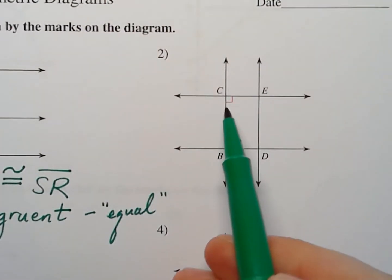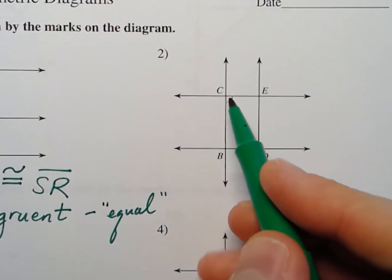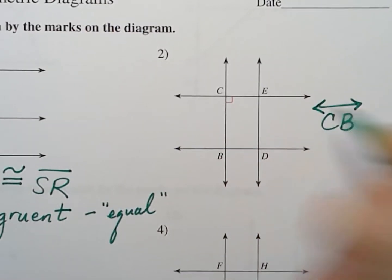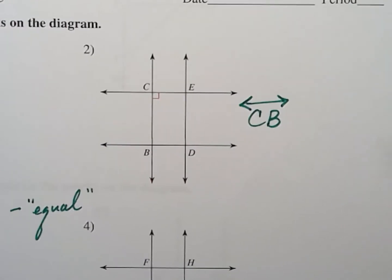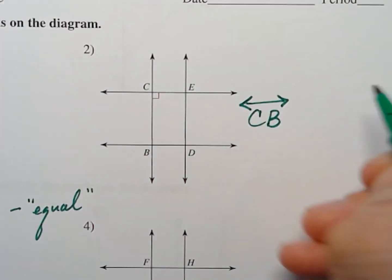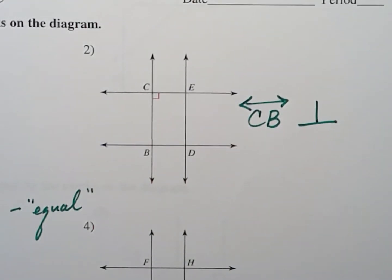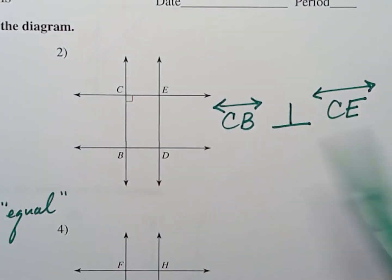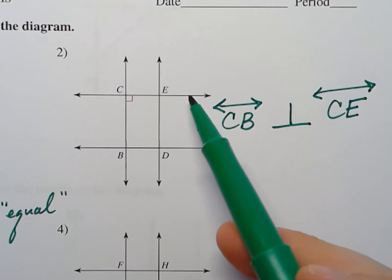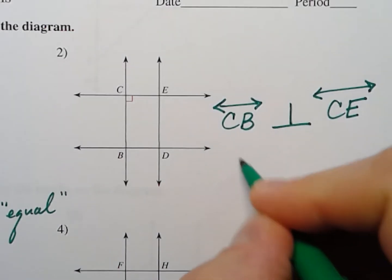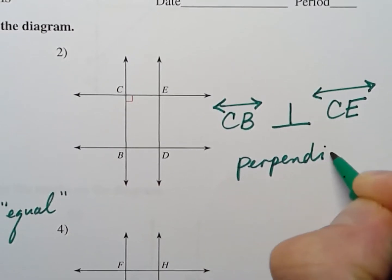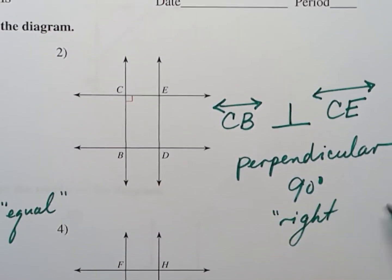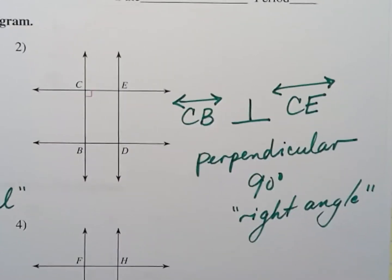Over here, that little mark right there means that these are perpendicular lines. So we can say that line CB is perpendicular to line CE. That's the symbol that means perpendicular, which means they are 90 degrees apart from each other — or it's a right angle.